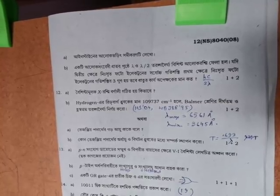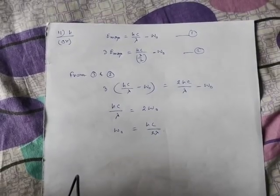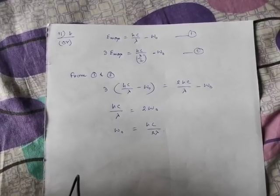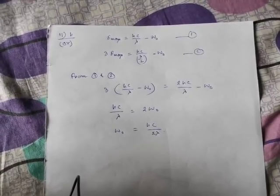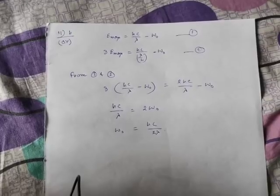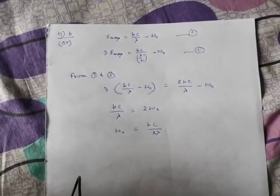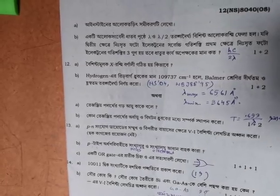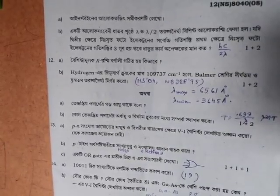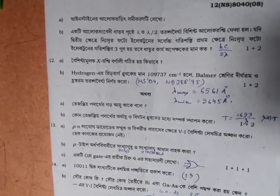Lambda by 2. This is the value of C by lambda minus W0. This is the value of W0. This is the value of C by 2. This is a very important question. This is the value of lambda max and lambda minimum.